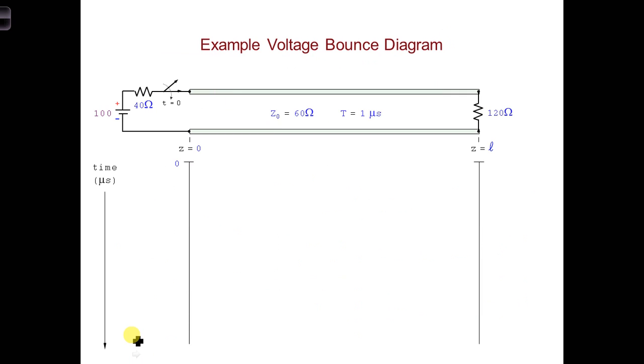Let's work through an example. For the transmission line shown here, spend a couple minutes drawing a voltage bounce diagram. Assume the transmission line is lossless. Label as much as you can, like the reflection coefficients and the amplitudes of each voltage wave, and so forth.